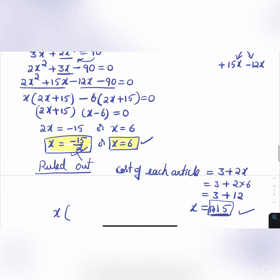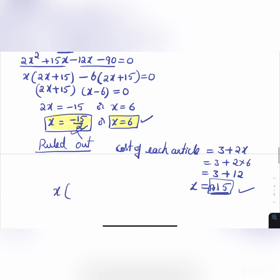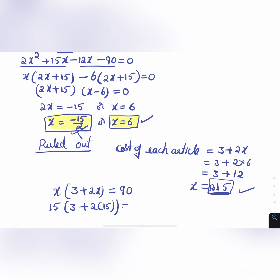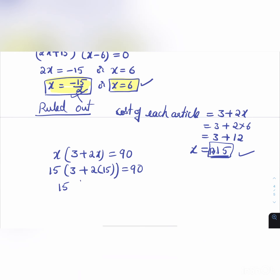Verifying: 6 articles at ₹15 each: 3 + 2(6) = 15, and 6 × 15 = 90. So the answer is confirmed correct.